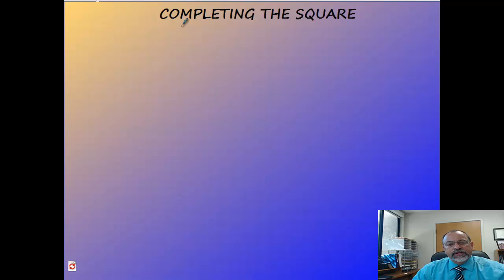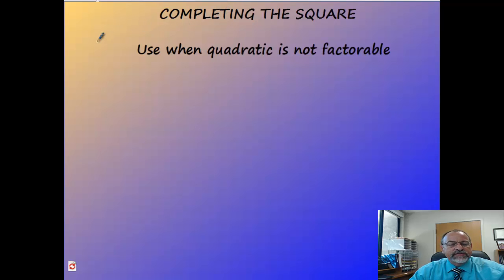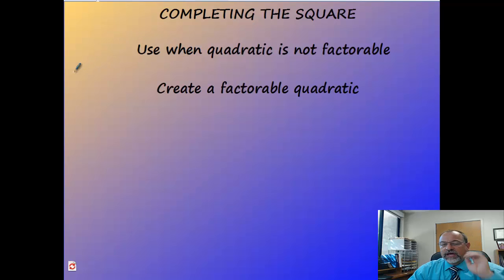With completing the square, what we're going to do is we're going to take a quadratic that's not factorable, something that doesn't factor easy, and we're going to turn it into something that does. And one of the easiest quadratics to factor is what we call a perfect square.